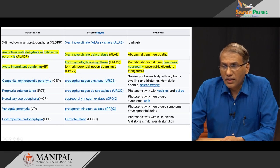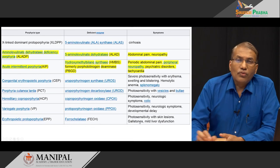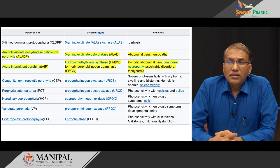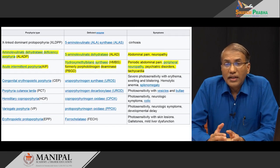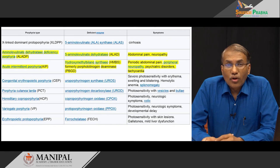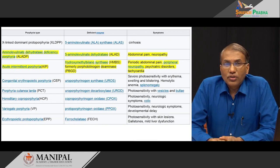Some porphyrias also come with gallstone formation. This is because of too much hemolysis or ineffective erythropoiesis occurring — the unwanted heme gets degraded into bilirubin. This bilirubin, or bile pigment, can sometimes cause pigment gallstones, even though the predominant category of gallstones in most individuals is cholesterol gallstones.